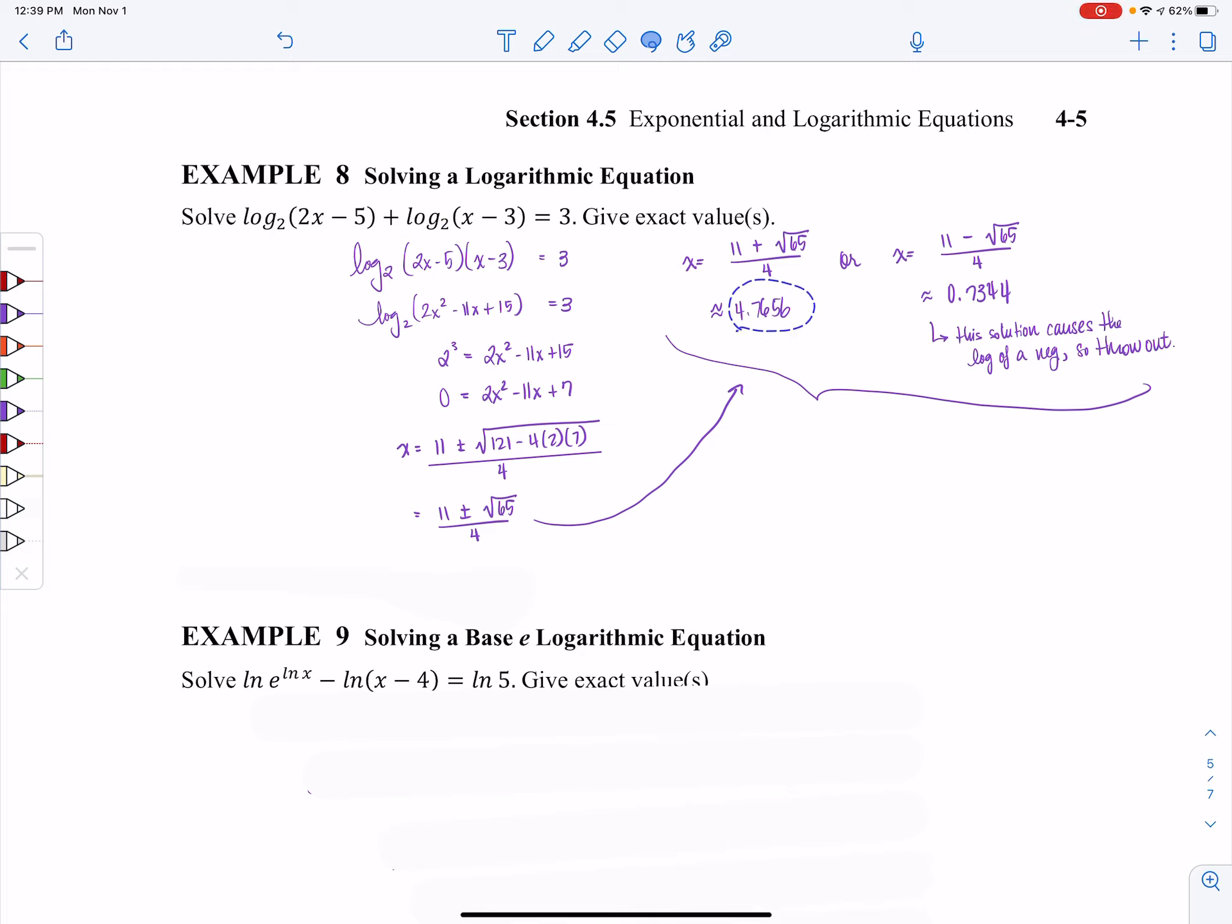When I look at the other one, the 0.7, the easier one to think of is 0.7 minus three. This is going to cause me to take the log of a negative. So I need to throw out the 11 minus the square root of 65 all over 4 because when I plug it in, it causes me to take the log of a negative number. And I'm never allowed to take the log of a negative. So I'm only going to keep the solution then that is 11 plus the square root of 65 all over 4.